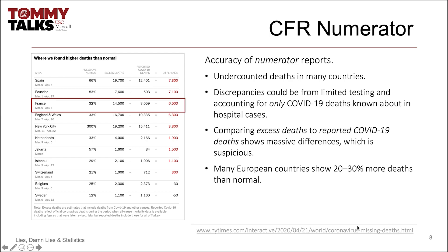Let's assess France, for example. France is currently experiencing an increase of about 32 percent. This results in about 14,500 more deaths than the average. But only just over 8,000 of these have been officially attributed to COVID-19, leaving about 6,500 unexplained deaths. Yes, these could be from various other factors and conditions. Everything else being held constant, though, this is a suspiciously large number.